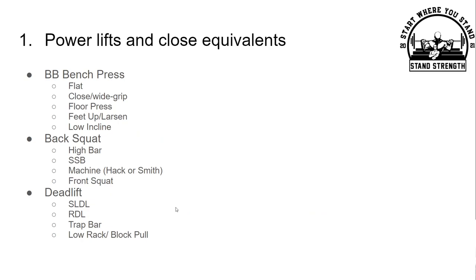When it comes to exercise selection, good powerlifters will use variation and good bodybuilders will use the power lifts in some capacity. For the barbell bench press, you can do flat, close grip, wide grip, flat or incline work — I'd recommend a low incline. You also have feet-up bench, the Larsen press, and floor press. These are all movements that you can use in this slot. It kind of depends on your leverages and what you need at the current moment, but generally speaking, the barbell bench press should be a staple for building upper body size and strength.